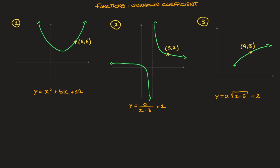In this video we learn how to deal with a function with an unknown coefficient — in particular, how to find that unknown coefficient. I'm going to work through three examples in which we're given the function's curve, its equation with an unknown coefficient, and the coordinates of a point through which the curve passes. So let's get started.